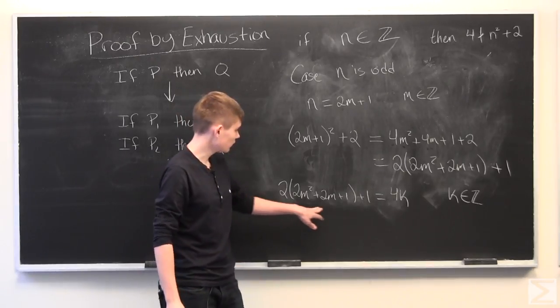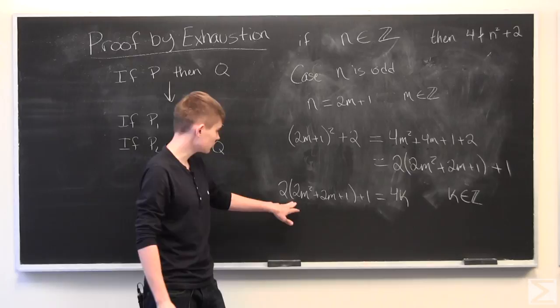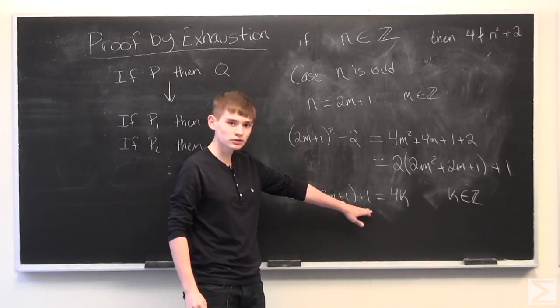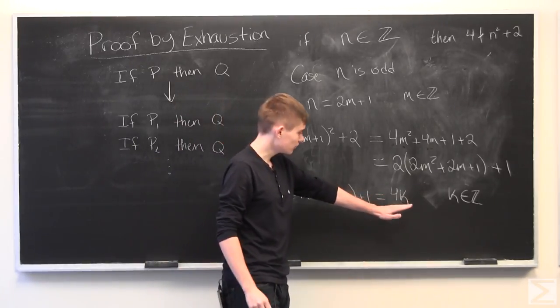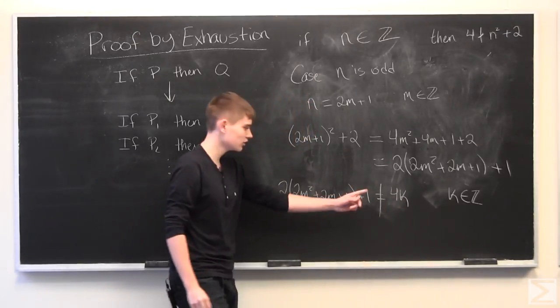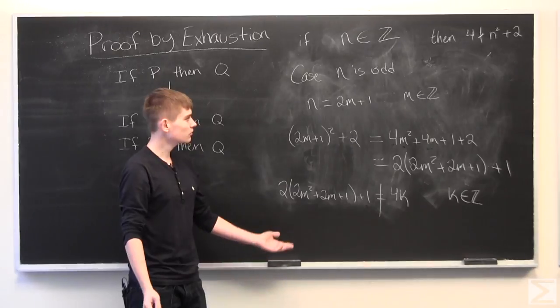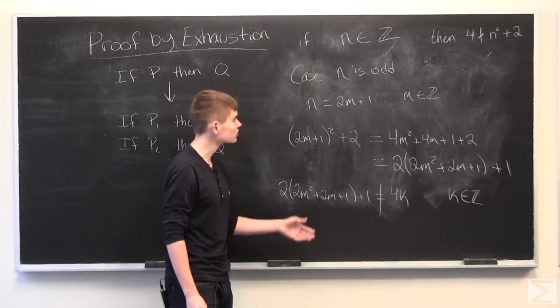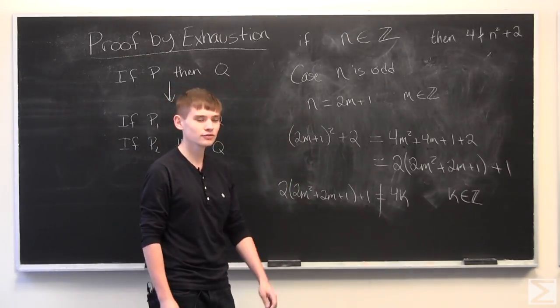And we have an odd term on this side, since it's an even term plus 1, making it odd. We have an even term on this side, and again, we have odd equal to even, which can't happen.